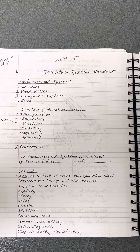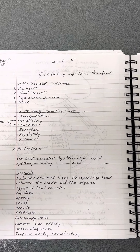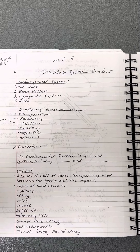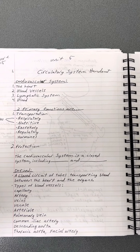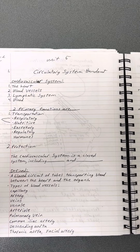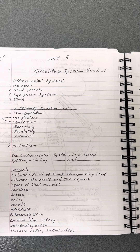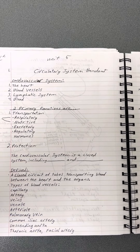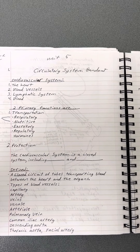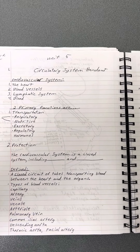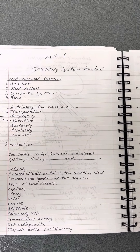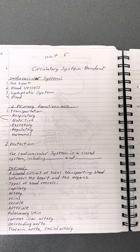Defined, the cardiovascular system is a closed circuit of tubes transporting blood between the heart and organs.